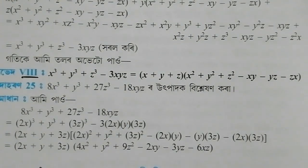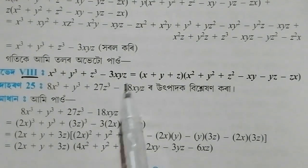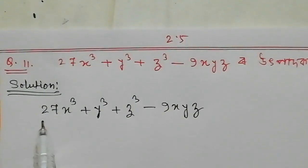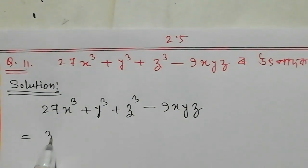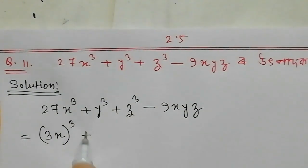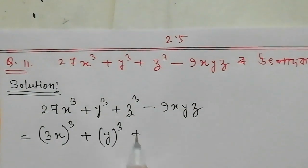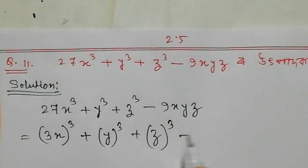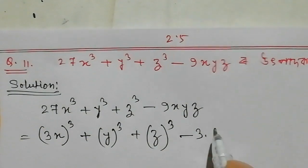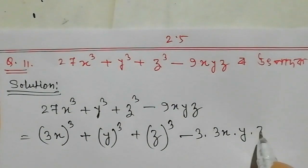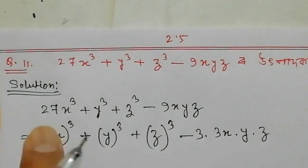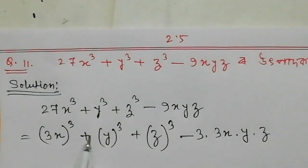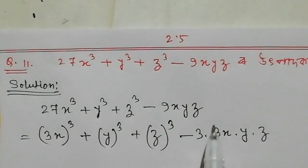The formula is x³ plus y³ plus z³ minus 3xyz, which equals (x plus y plus z) into (x² plus y² plus z² minus xy minus yz minus zx). Now I am going to write this question. So 3x³ plus y³ plus z³ minus 3xyz.